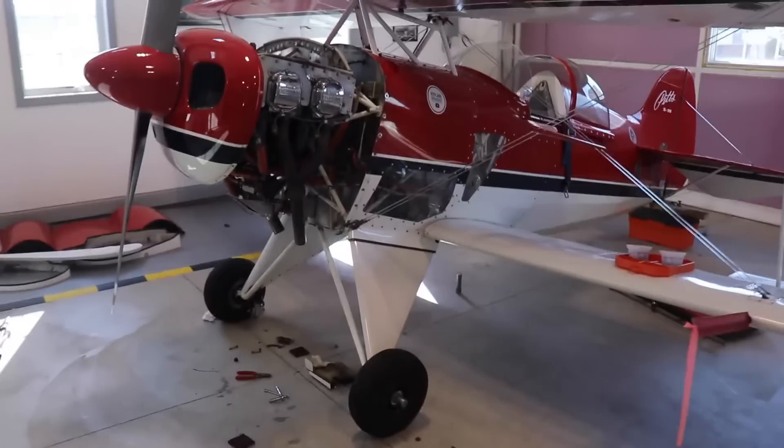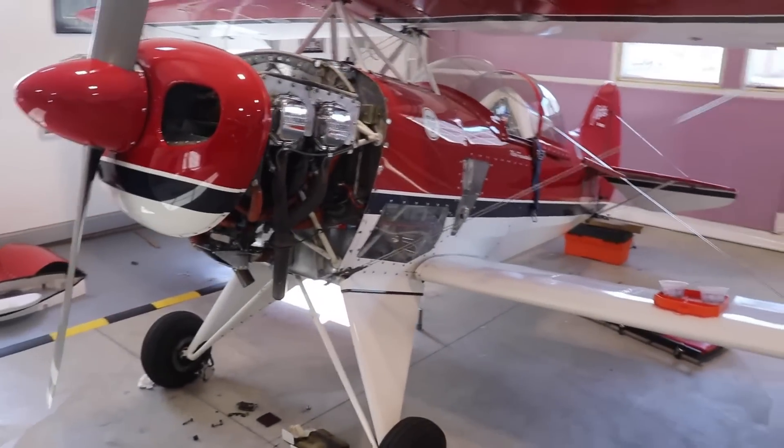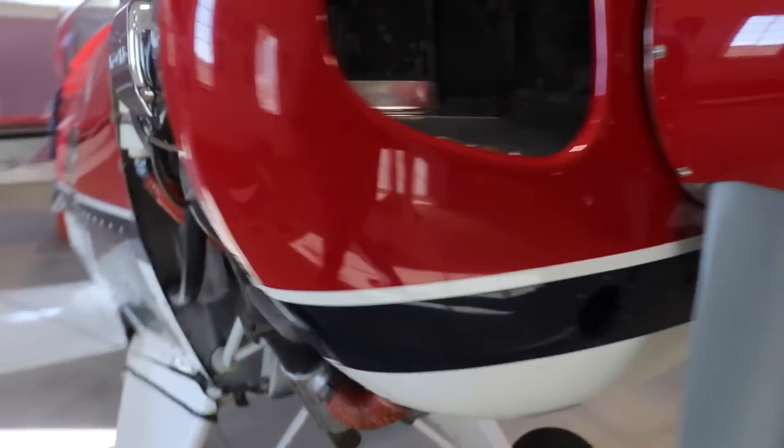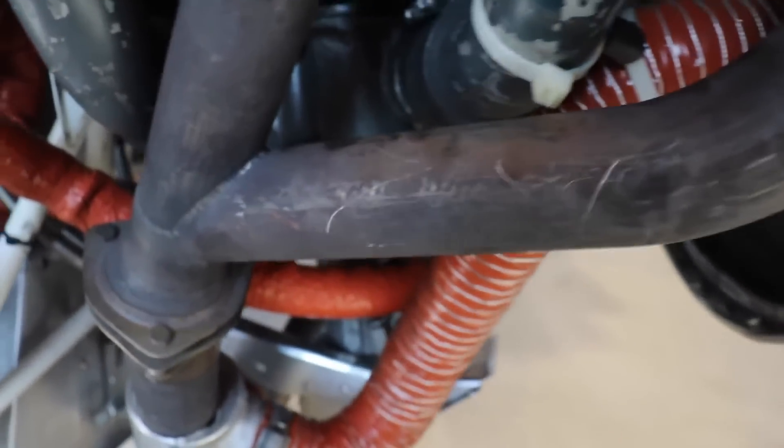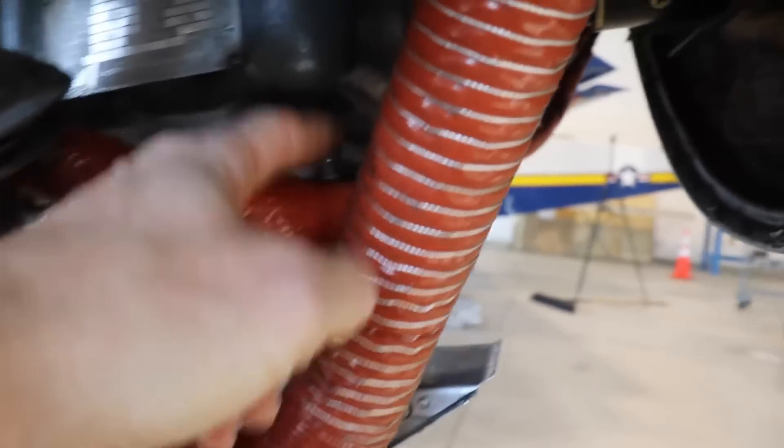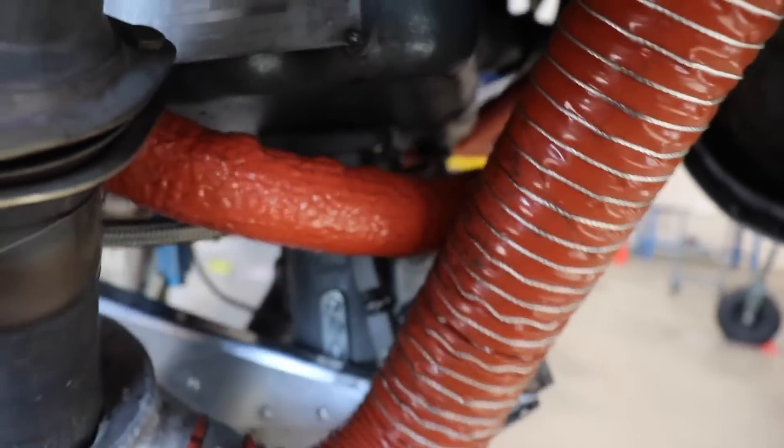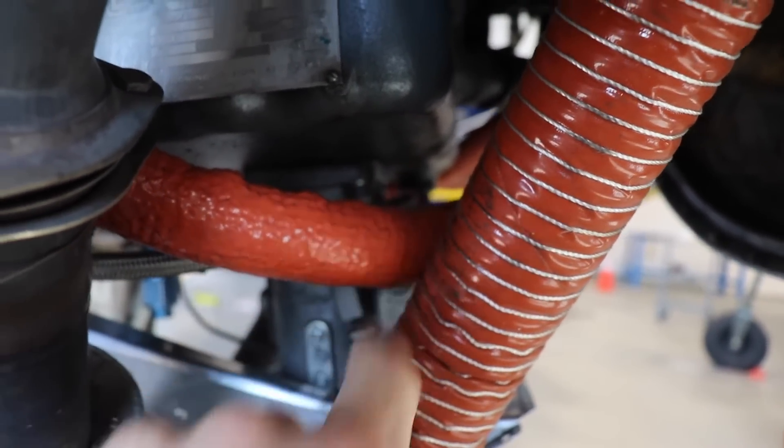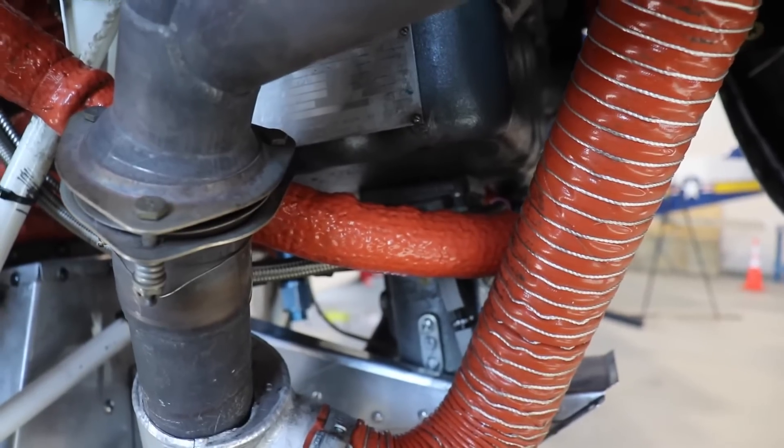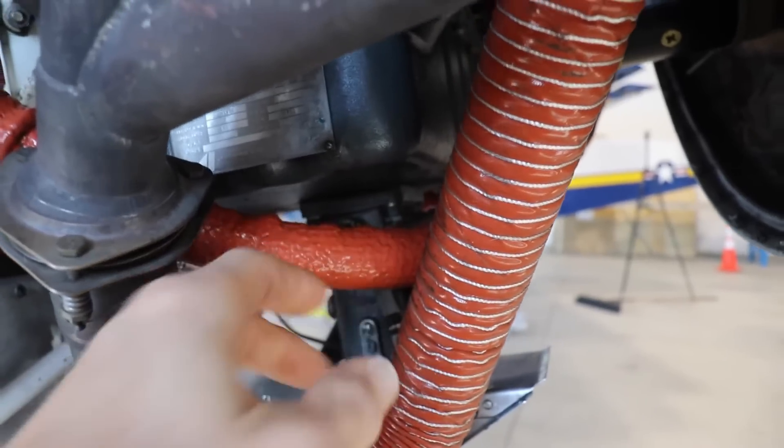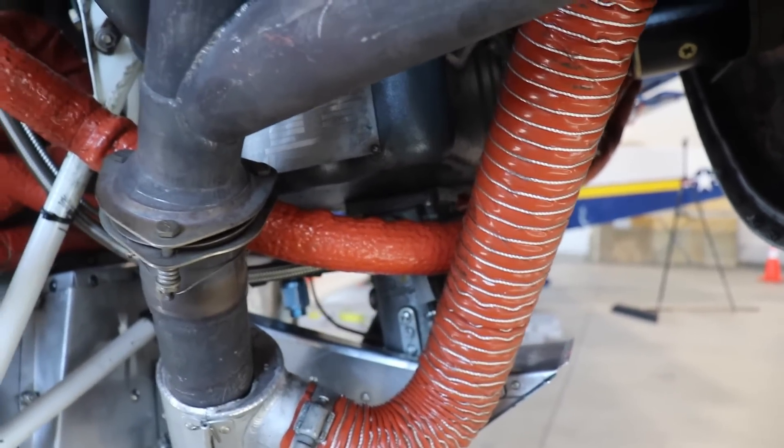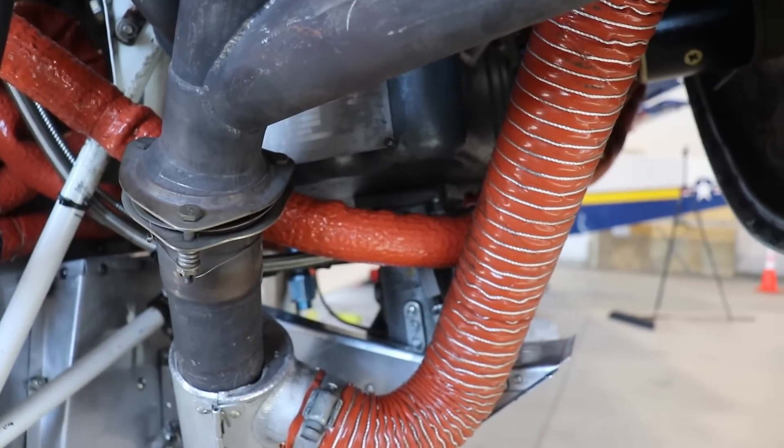Now while I was doing that the mechanic was here for the Pitts and we're trying to get this finished up. Almost everything is done on it now and one of the things that he found which is interesting is that the throttle cable, which is right back in here, wasn't going all the way forward because it was hitting this oil line so apparently I wasn't getting full power on the engine. So we kind of moved this line a little bit and now we can get full travel on the throttle so it will be interesting to fly this again and see if I notice any difference.